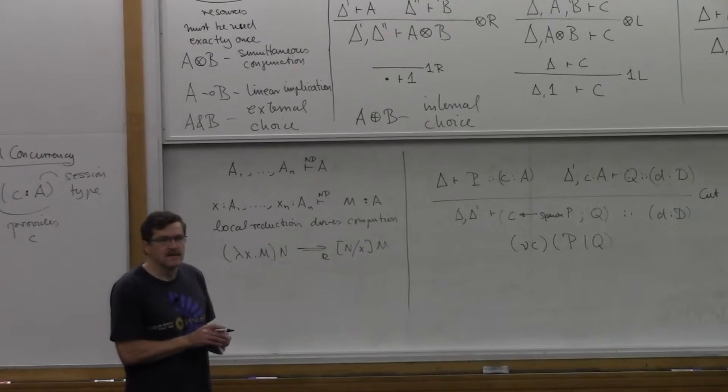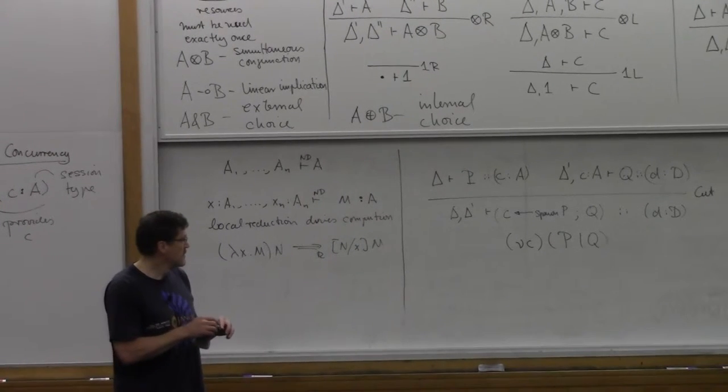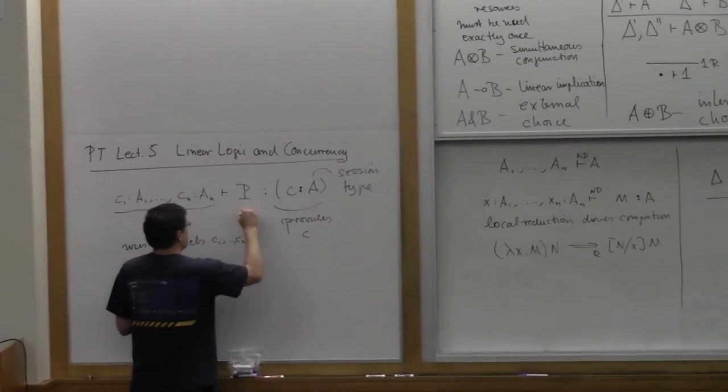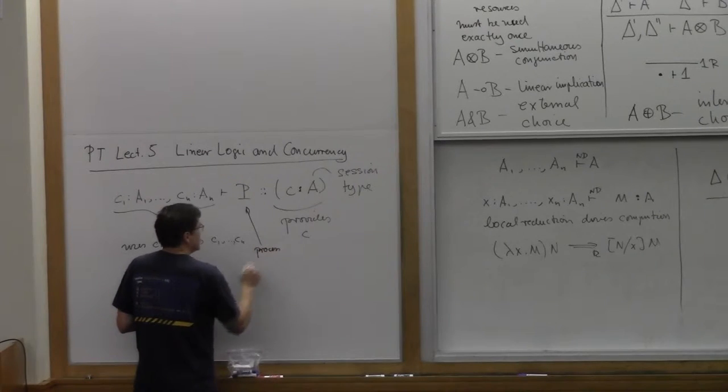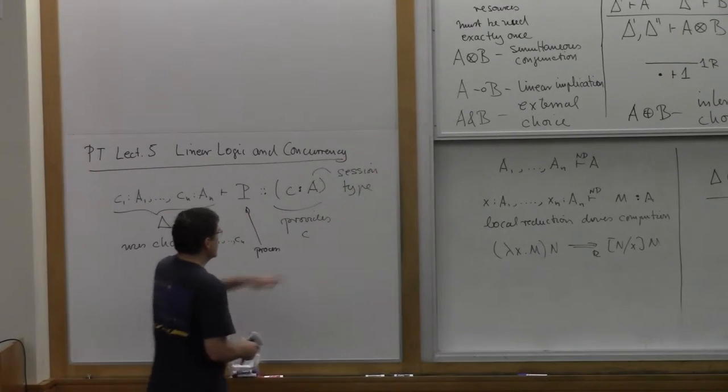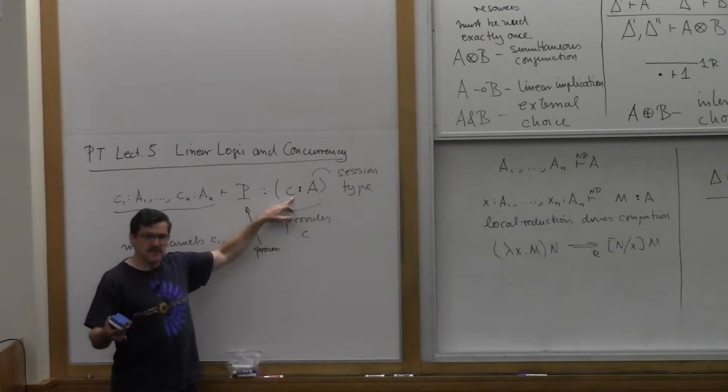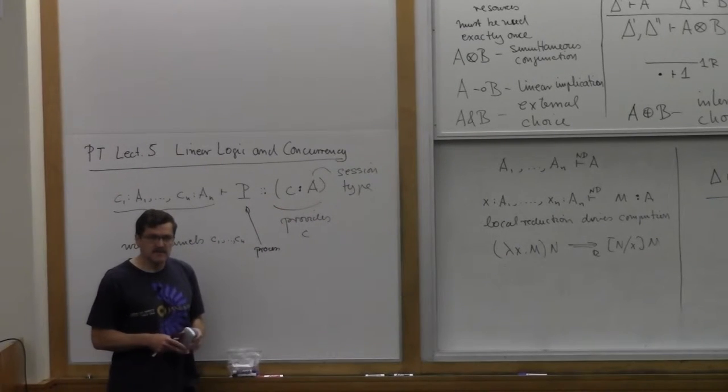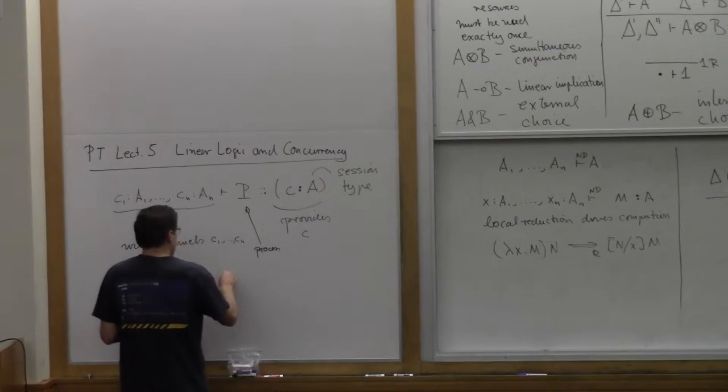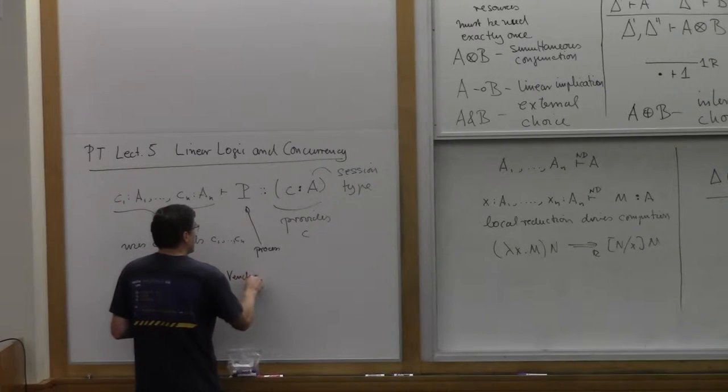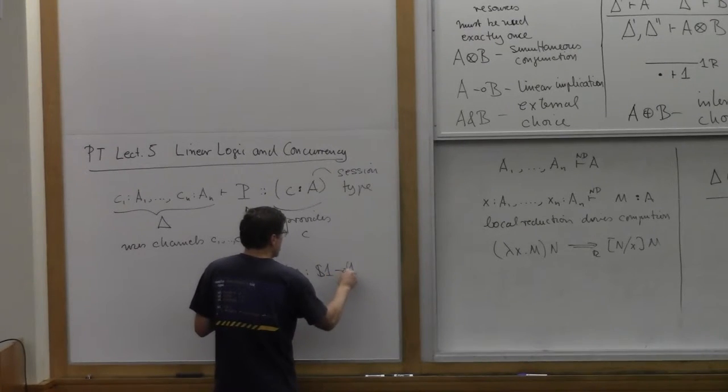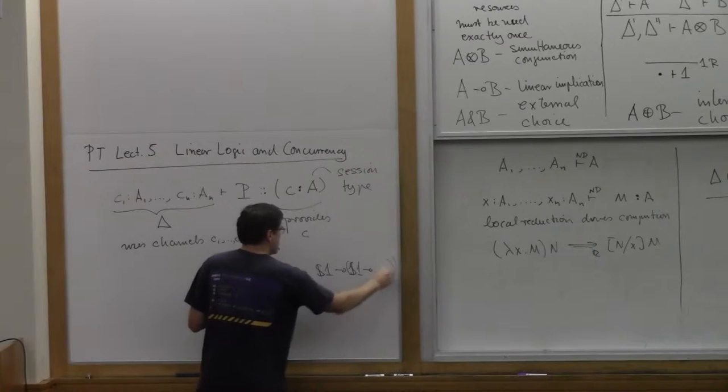The process P provides a service along one channel. Think about the process of being the vending machine. The vending machine provides a service. The channel is one way to interact with the process. And the type prescribes how the interaction is supposed to take place.